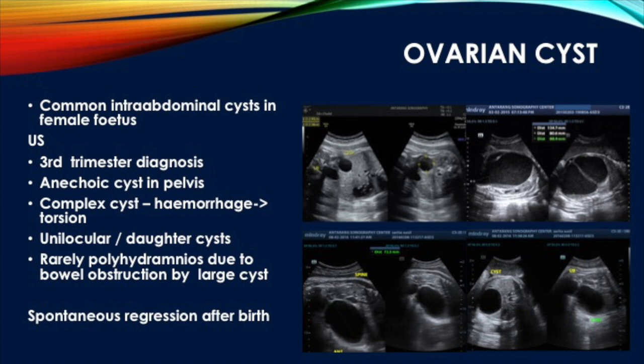Ovarian cysts are the most common intra-abdominal cysts in the female fetus, usually seen in the third trimester. Presentation is typically an anechoic cyst in the pelvis; it can be hemorrhagic and may undergo torsion, and may be unilocular or multilocular. Rarely, polyhydramnios can occur due to bowel obstruction by a large cyst. Spontaneous regression is always seen after birth. On ultrasound, we must show the cyst separate from the bladder using color Doppler to identify the umbilical arteries.